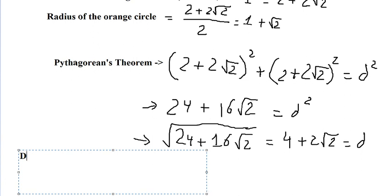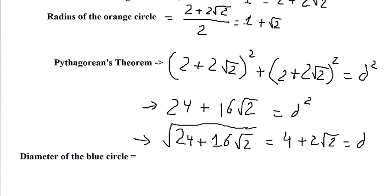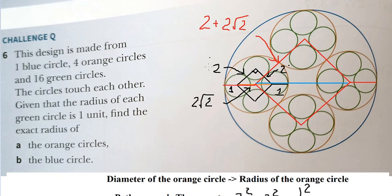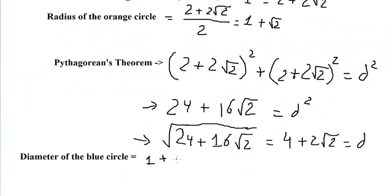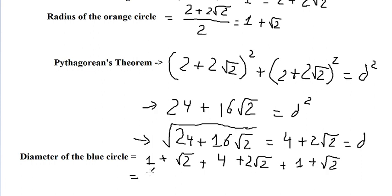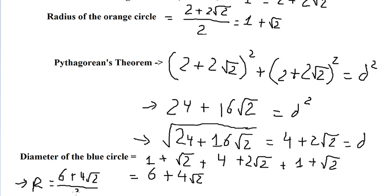Now we can find the diameter of the blue circle. We add: one plus the square root of two, plus four plus two times the square root of two, plus one plus the square root of two, giving us six plus four times the square root of two. Dividing by two gives the radius: three plus two times the square root of two. That is the final answer.